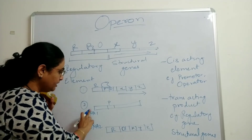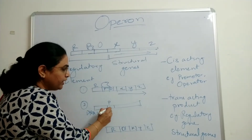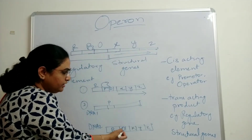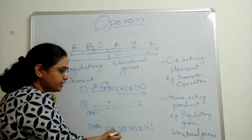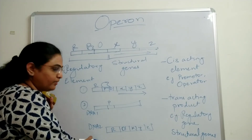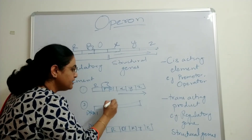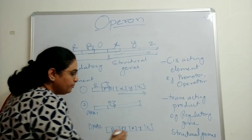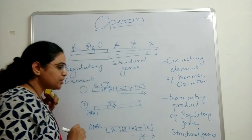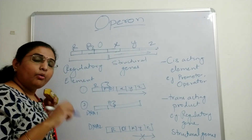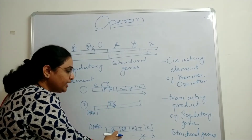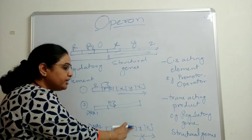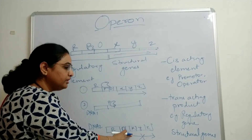In the second case, the promoter is placed on a separate DNA sequence (DNA one), while the structural genes, operator, and regulatory gene are on a second DNA sequence (DNA two). When RNA polymerase arrives, it binds to the promoter on DNA one, but it does not transcribe the structural genes on DNA two — because the promoter is not adjacent to those structural genes.